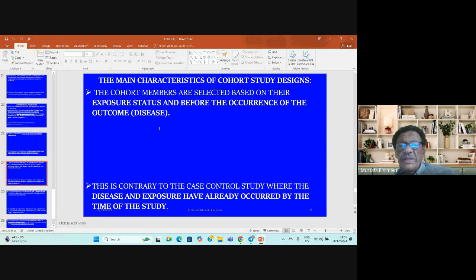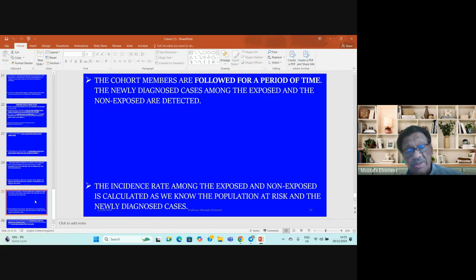The main characteristics of cohort study design: cohort members are selected based on exposure status before occurrence of outcome or disease. This is contrary to case-control study where disease and exposure have already occurred by the time we carry the study. This is a main weakness of case-control study and advantage of cohort study design.